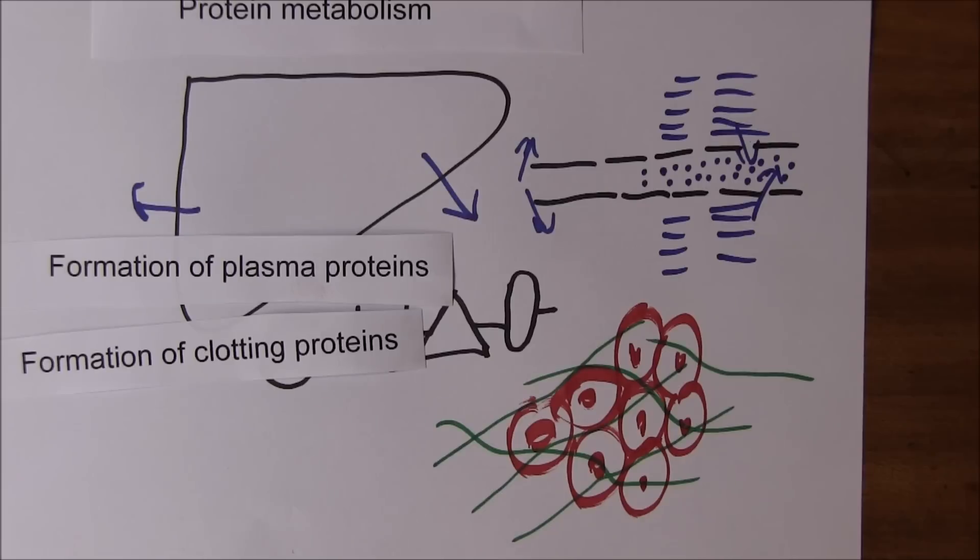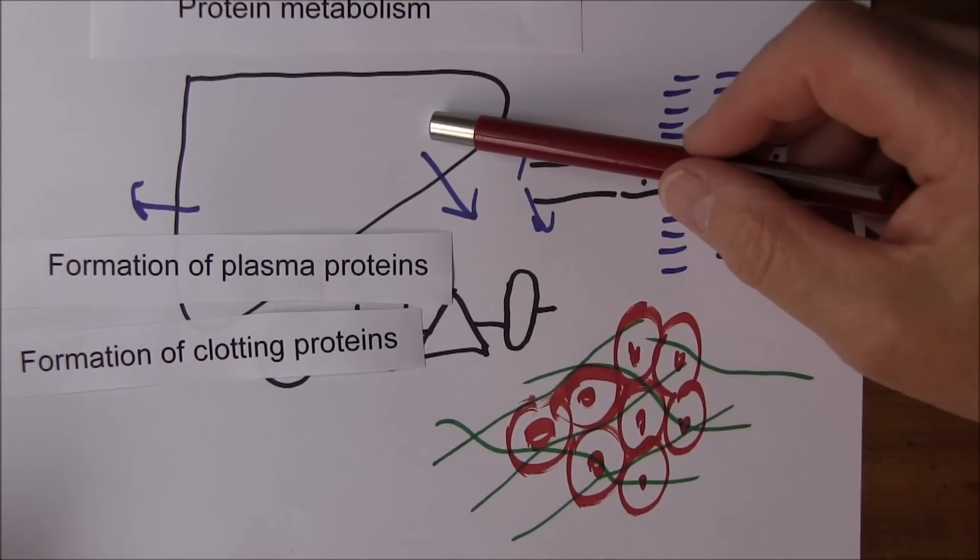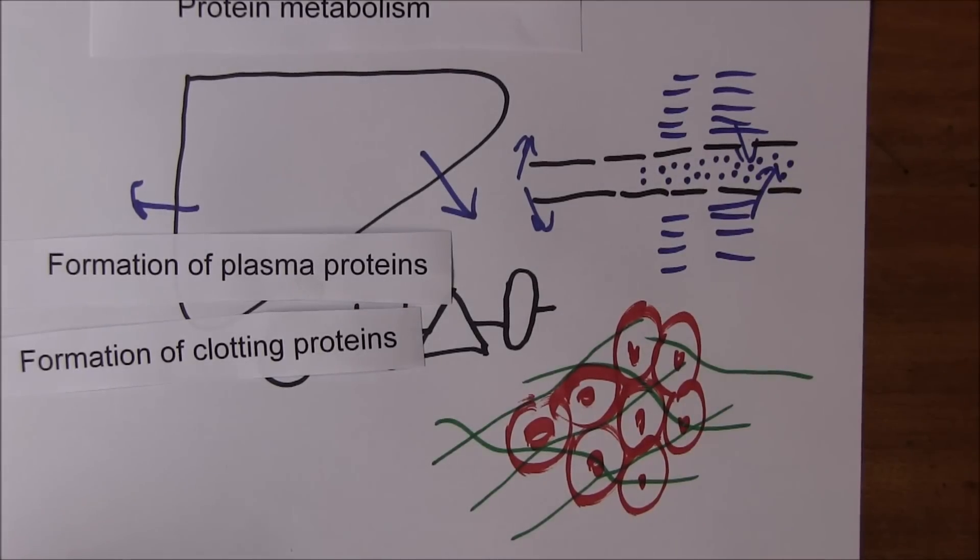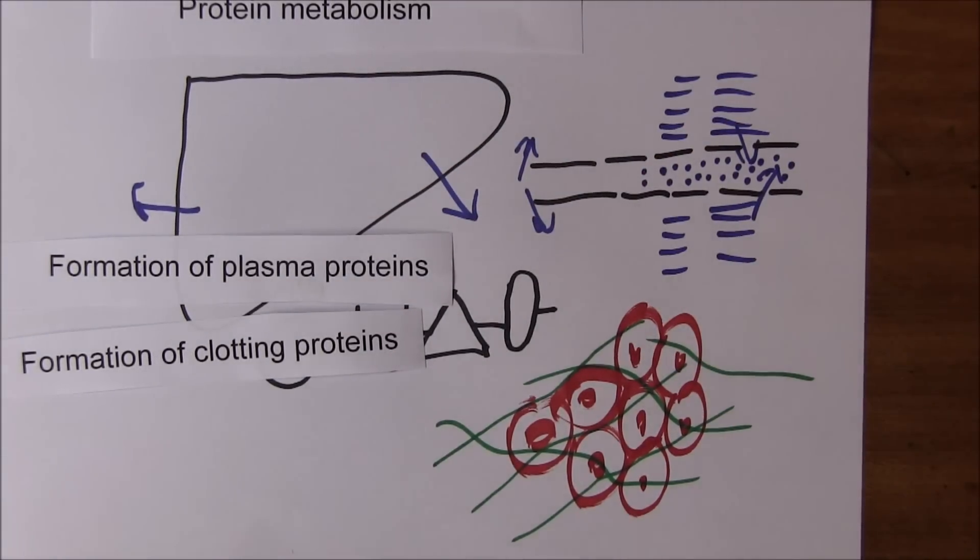We see that these amazing hepatocytes are converting one form of amino acid into another in this process of transamination. They're breaking amino acids down to form energy in this process of deamination, and they're producing a wide range of proteins which have essential systemic physiological functions.